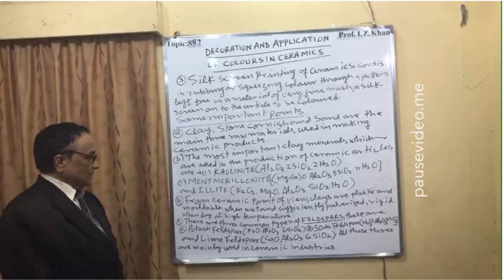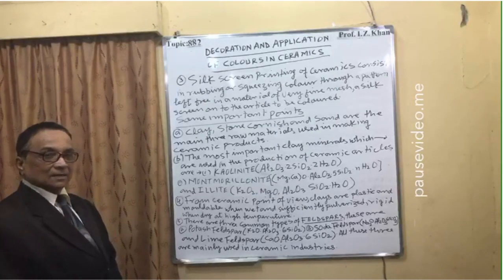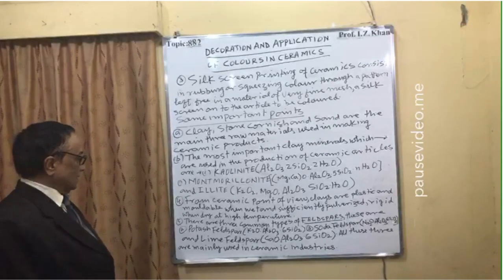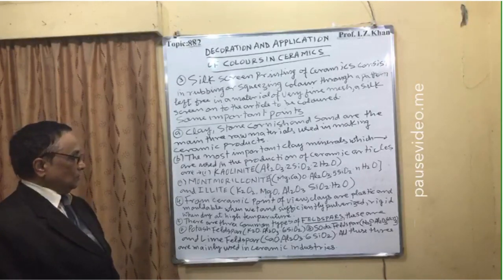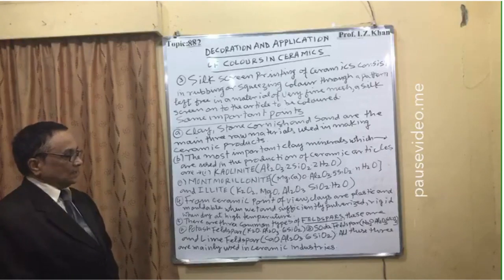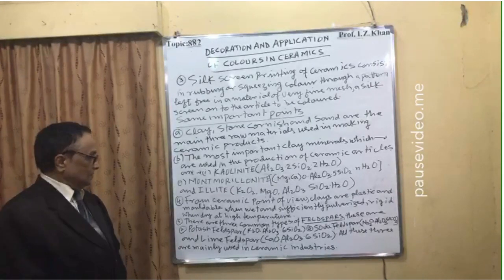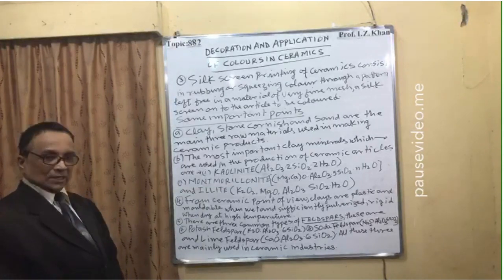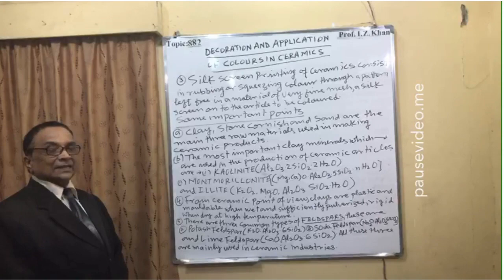There are three common types of feldspars, which are an important type of rock and can be sodium- or potassium-based. They are as follows: (a) Potash feldspar with formula K2O · Al2O3 · 6SiO2; (b) Soda feldspar with formula Na2O · Al2O3 · 6SiO2; and (c) Lime feldspar with calcium, formula CaO · Al2O3 · 6SiO2. These feldspars — potassium, sodium, and calcium based — are mainly used in the ceramic industry and play a very important role.